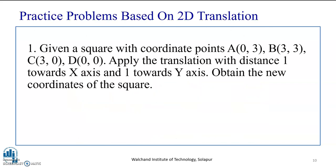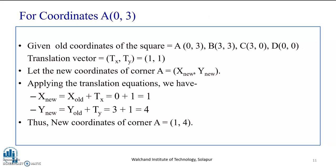Based on the previous understanding, we now try to solve a given problem. Given a square with coordinate points A(0,3), B(3,3), C(3,0), D(0,0), apply the translation with distance 1 towards x-axis and 1 towards y-axis. Obtain the coordinates of the square. So, primarily, in order to perform 2D translation, we are given a square ABCD with the position in x and y. We have been told to translate this square with one unit in both x and y-axis. The objective here is to find the new coordinates of the translated square. Now we will be solving and applying the translation individually for every coordinate of the square.